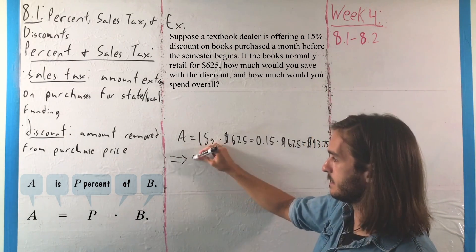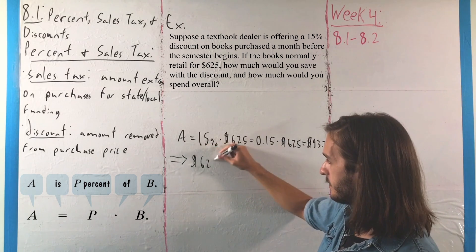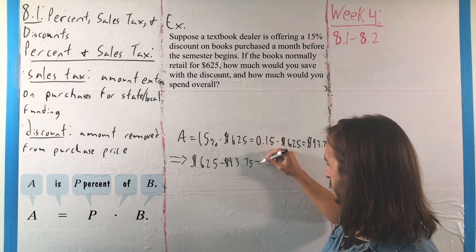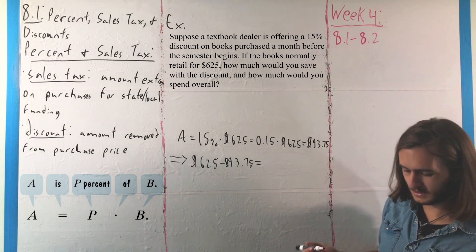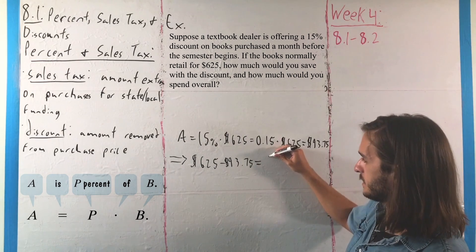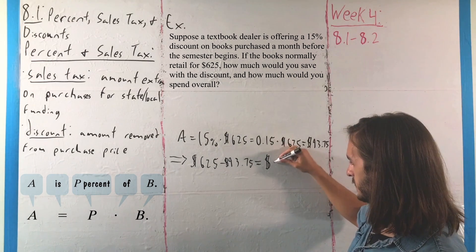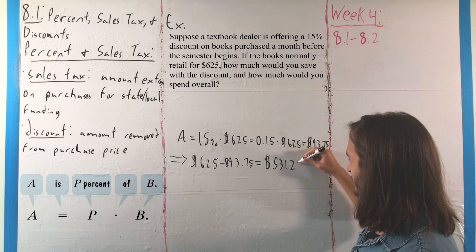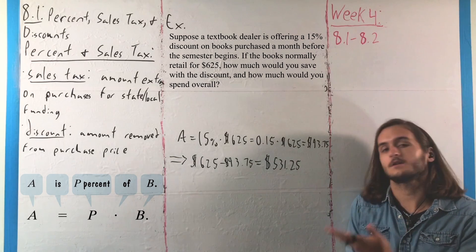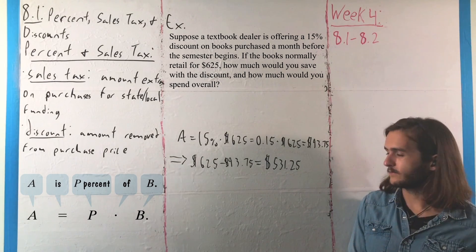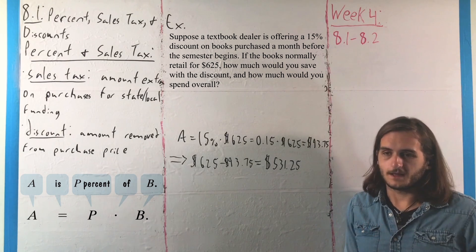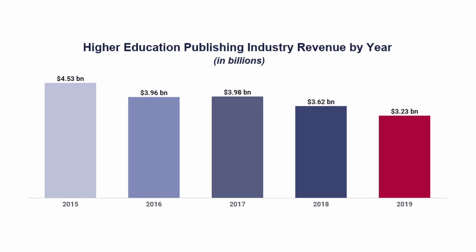Because our discount is $93.75, the actual value you'd end up paying would be $625 minus $93.75. We would end up paying $531.25, albeit before tax. So I hope you're in Florida for that and not Alabama, for example, because that's still quite a lot of money — quite a bit more than you should be paying, but that's life.